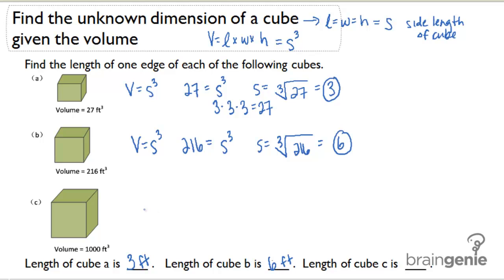Lastly for part C, we're going to do the same exact process. V equals S cubed. So 1000 equals side cubed. So side equals the cubed root of 1000, which is simply 10. So the length of cube C is 10 feet.